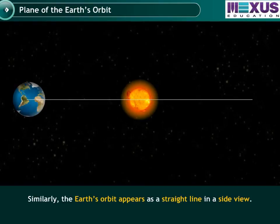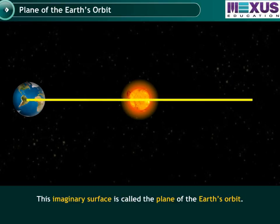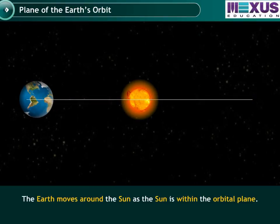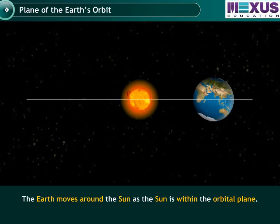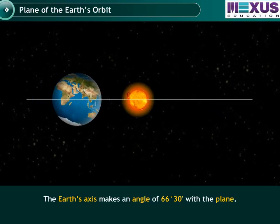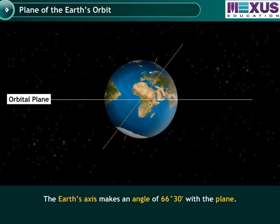Similarly, the Earth's orbit appears as a straight line in a side view. This imaginary surface is called the plane of the Earth's orbit. The Earth moves around the Sun as the Sun is within the orbital plane. The Earth's axis makes an angle of 66 degrees, 30 minutes, with the plane.